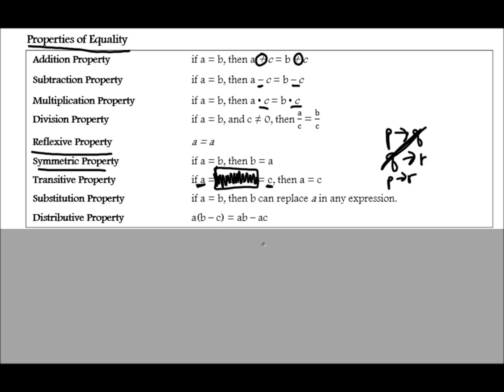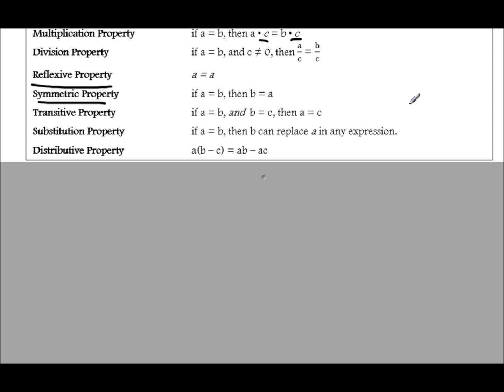Substitution property is any time you replace one term with an equivalent. For this example, if a equals b, then b can replace a in any expression because they're the same thing. So if I originally have a equals b, and then in the next line I have a equals a, then I've used the substitution property — because I've substituted b for a.